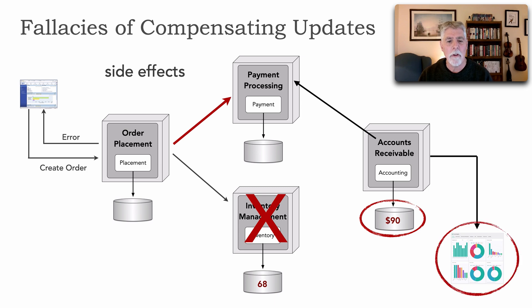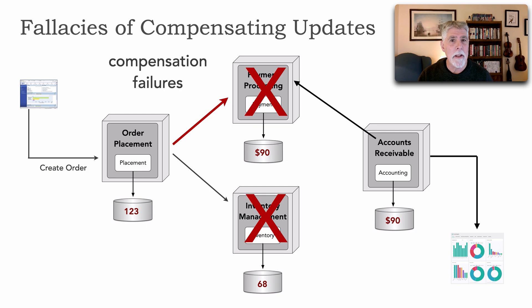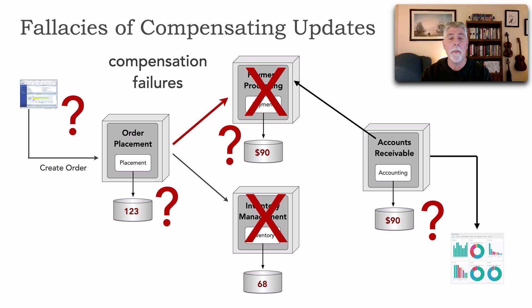That was the first side effect — because during the course of that transaction, anybody else can read any of this data while we're still in the middle of it. Then I showed the other part of the fallacy of compensating updates: that compensating updates always work. If we try to reverse that payment, that could fail, which now puts us in a pretty significant inconsistent state and we have no idea what to tell the user.